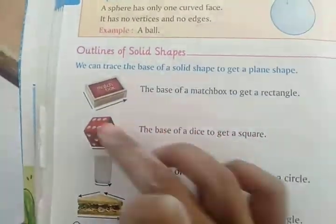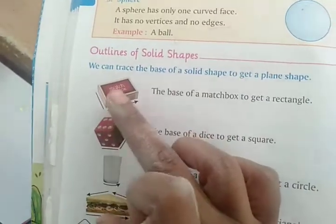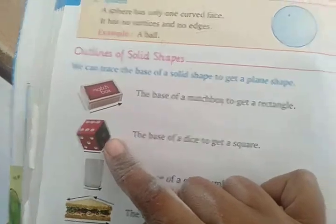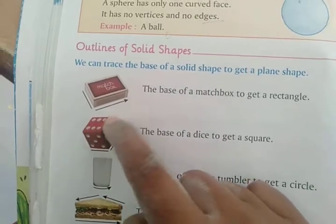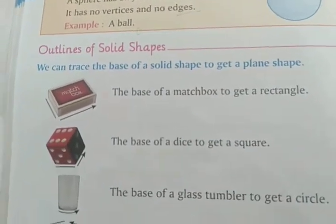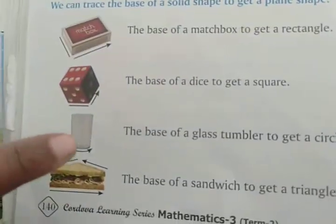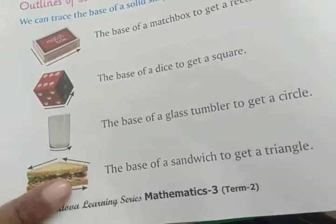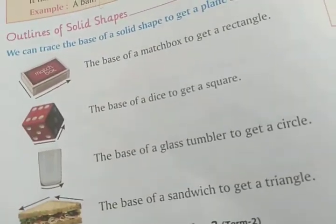دیکھو یہ کونسے shape میں ہے — cuboid shape میں، matchbox۔ یہ dice — cube کے shape میں ہے۔ اس کے سارے face square shape میں ہیں۔ یہ glass — cylinder shape میں ہے، اس کے نیچے flat، اوپر بھی flat، اور side میں curve ہے۔ نیچے sandwich — triangle کے shape میں ہے۔